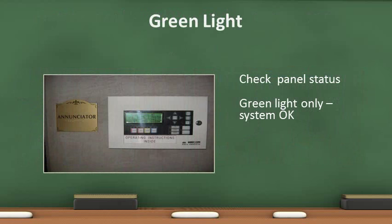When inspecting an enunciator panel, look for a green light which indicates the system is on. A message on the panel will tell the status of the panel, usually a date, time, and address of the building. Others may simply indicate the system is okay or normal.